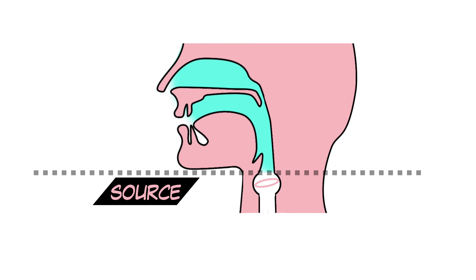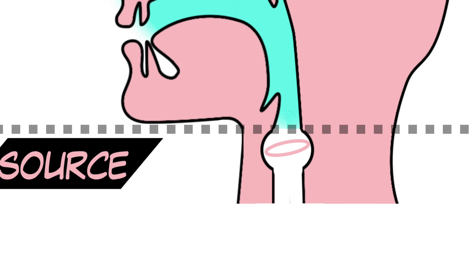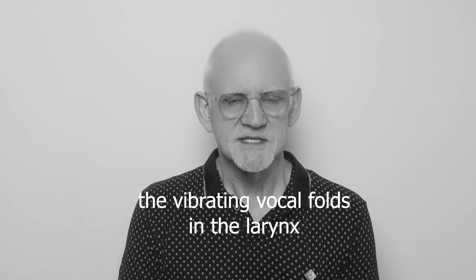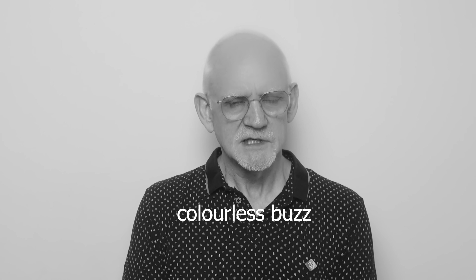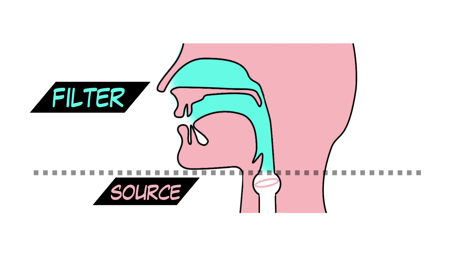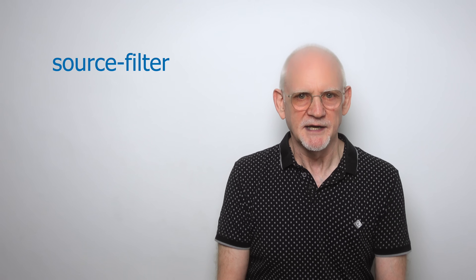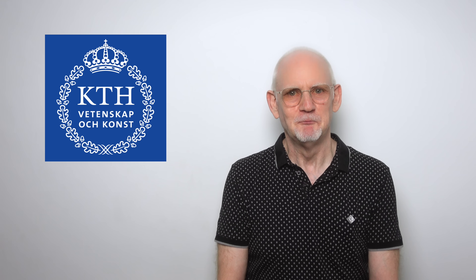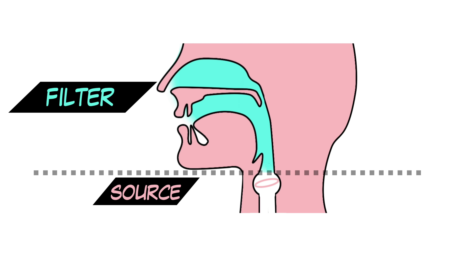Now if those answers weren't what you expected, let me explain. A voice can be broken down into two main parts. The source of the sound is the vibrating vocal folds in the larynx, which create a kind of colorless buzz. Then the cavities of the vocal tract filter or shape that buzz into recognizable speech. This is called the source-filter model, developed by Gunnar Fant. The source — the vibrating vocal folds — sets the musical pitch and intonation. The flexible filter sets the resonances, which gives us different vowels and most of our individual voice quality.